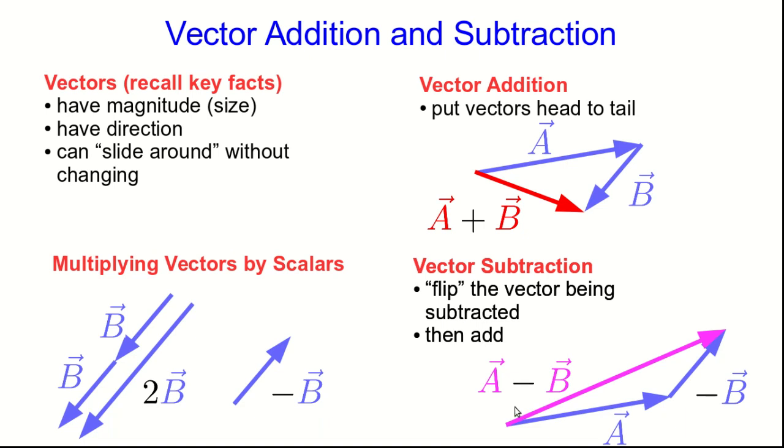Manipulating vectors this way by drawing pictures is often called graphical vector addition and subtraction as opposed to algebraic vector addition and subtraction. So when I say graphical vector manipulation, I don't mean we're drawing a graph. The word graphical just means with pictures.